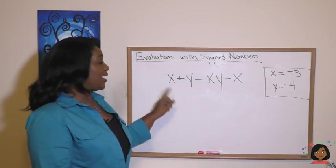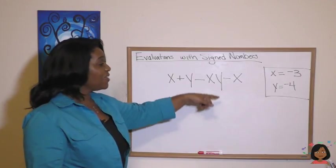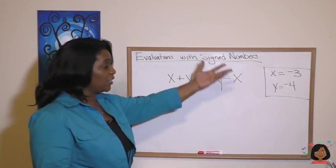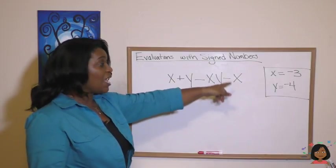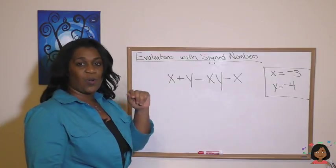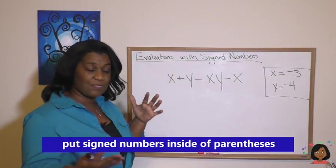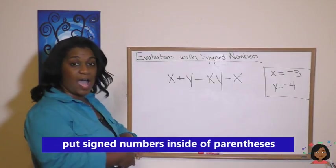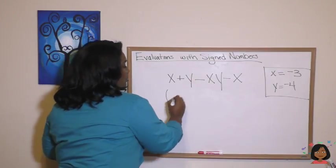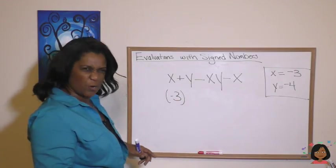I've got x + y - xy - x. And I'm going to substitute the values negative three for x and negative four for y. So a tip here is to put everything inside of parentheses. So for x, I'm going to put in a negative three inside of a parentheses for now.